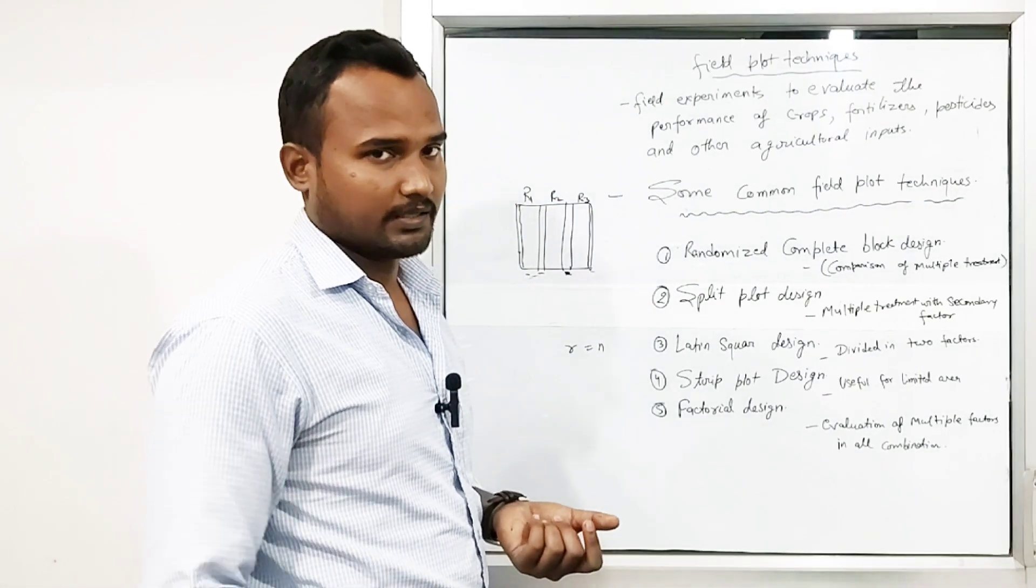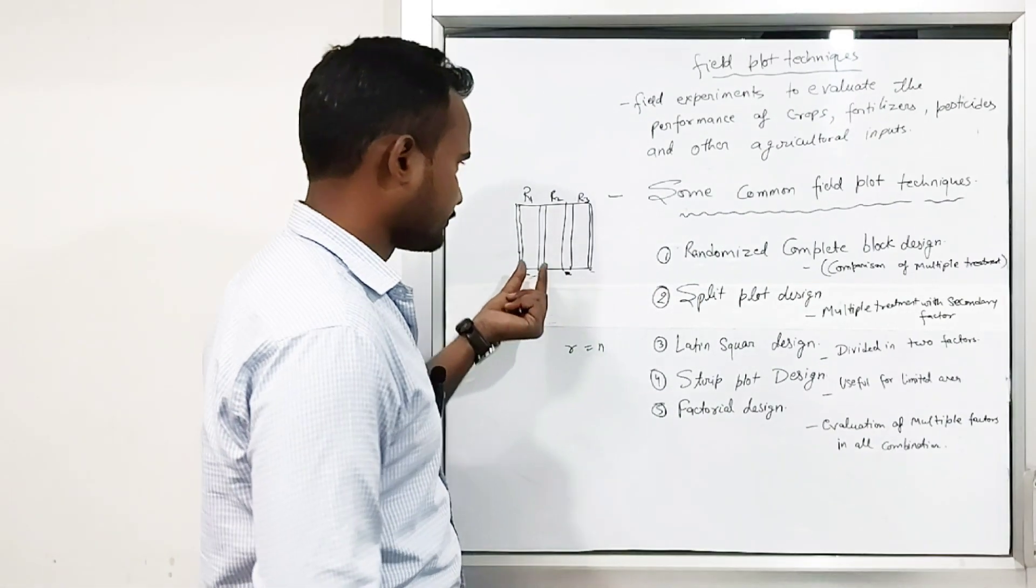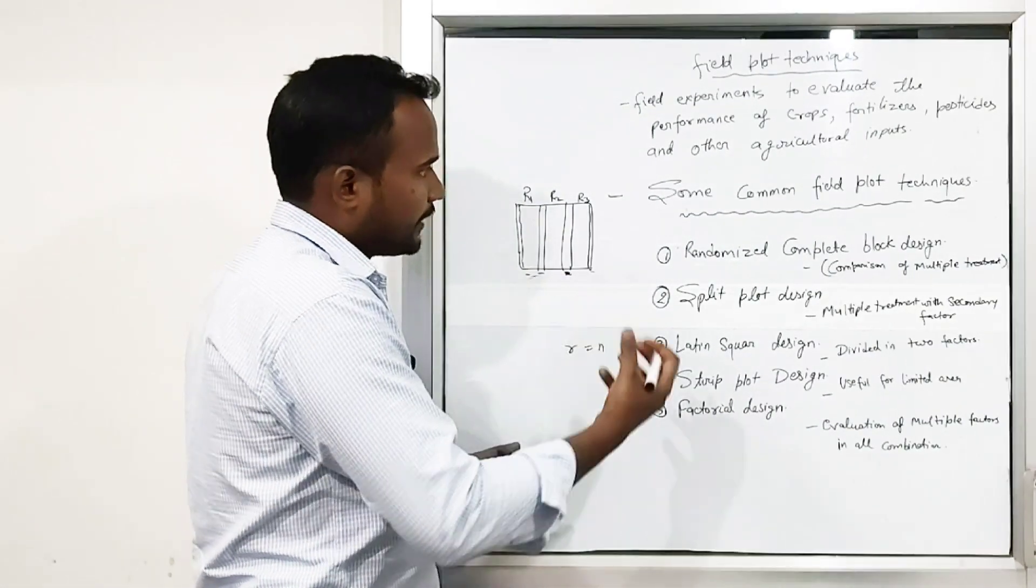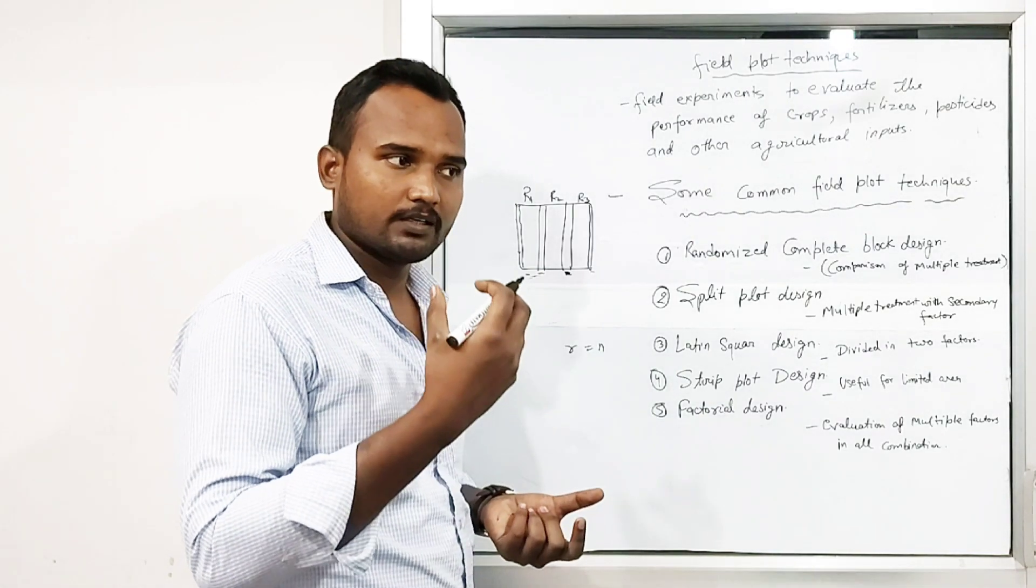By keeping gap, we generally make three replications, R1, R2 and R3. These are replications. We make three plots.